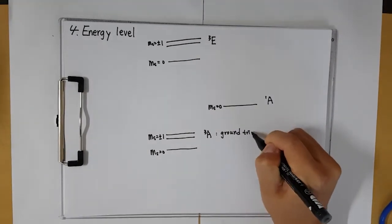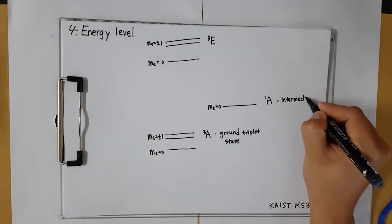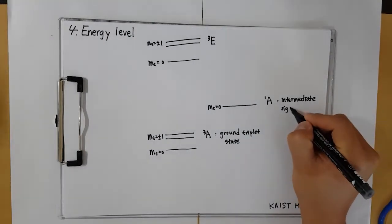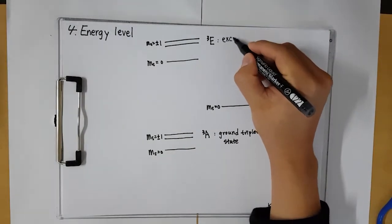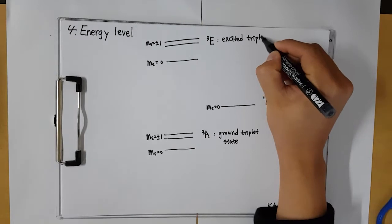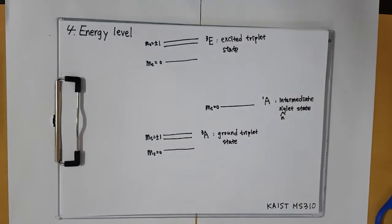According to previous slide, magnetic interaction by two electrons in NV Center caused the separation of these two-state triplet. Therefore, there are three states in NV Center: Ground triplet state, intermediate singlet state, and excited triplet state.